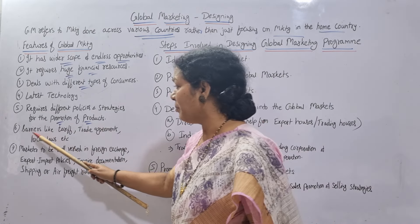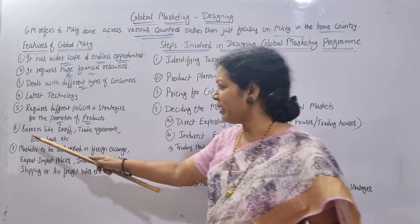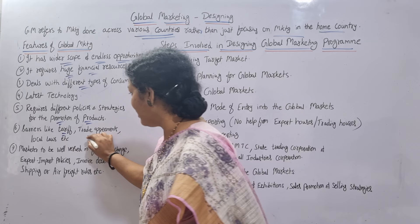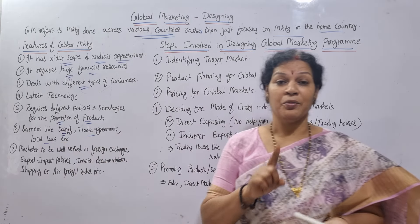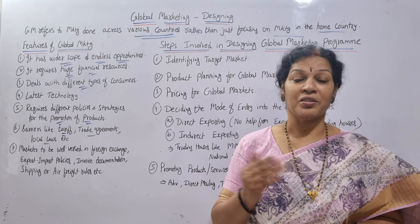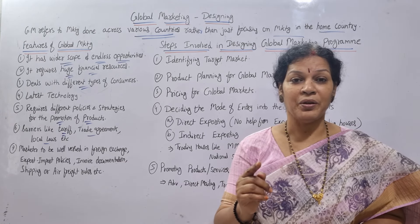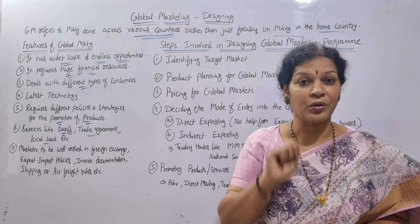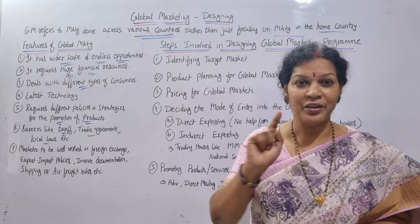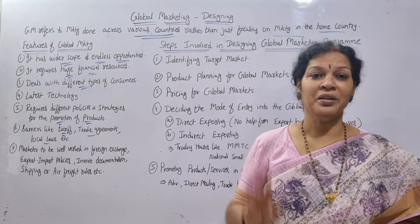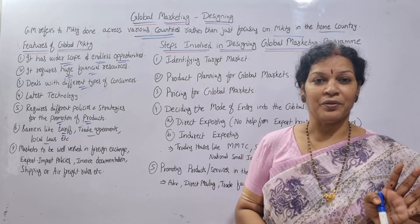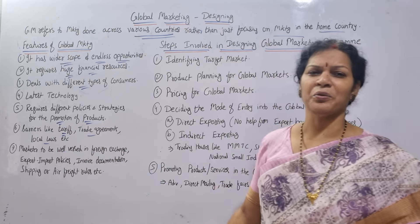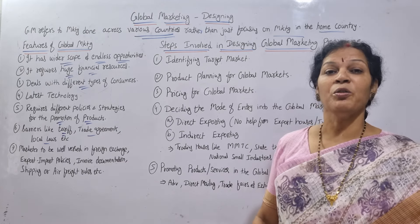The sixth feature is that there are barriers in global marketing, such as tariffs, trade agreements, and local laws. Country to country, the laws differ. When you are doing any import or export transaction, you need to satisfy both your own country's laws and the other country's laws as well. Good understanding of all these is required.